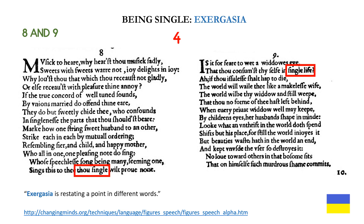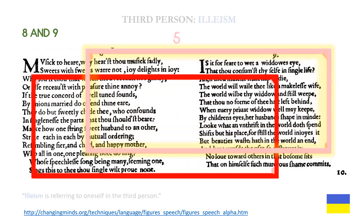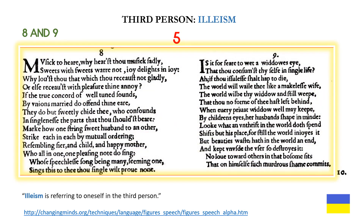My next example is going to be very controversial, but I will get to this in a later video. I contend that both poems are using the rhetorical figure of eleism. Eleism is referring to oneself in the third person. I'm going to get back to that in a future video.